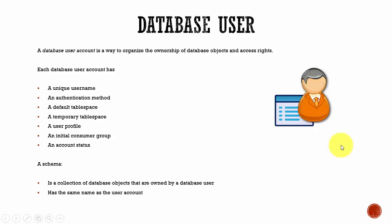For example, we have tables called sales, customer, and invoice, and we need to logically group these database objects. We can create a user called inventory and then create these three tables under this user. This user inventory has ownership of these three database objects, and if he wants, he can give permissions to different users — select, delete, or update privileges.